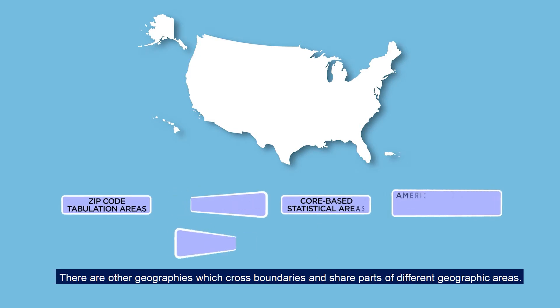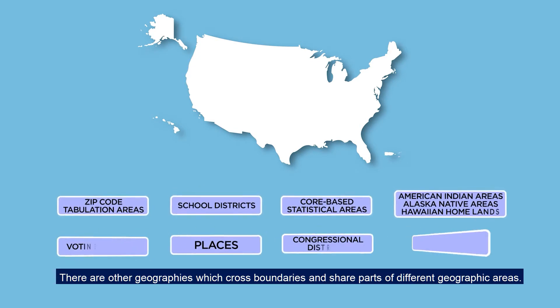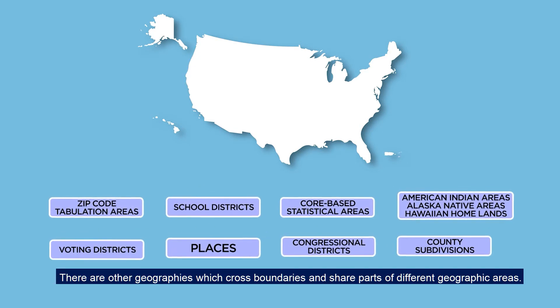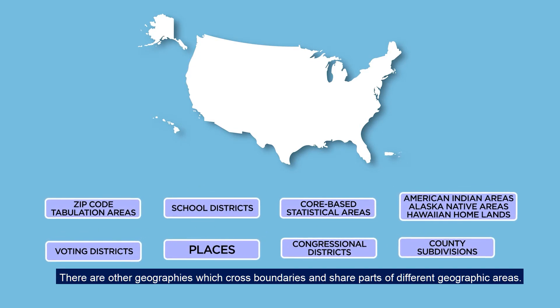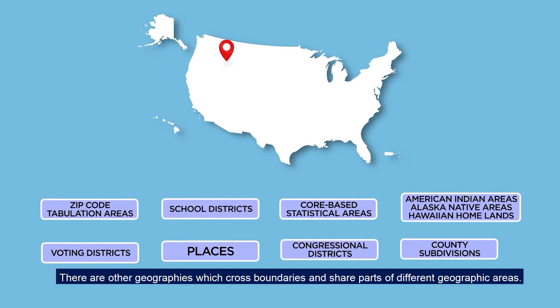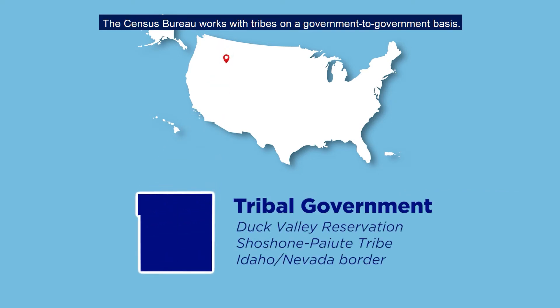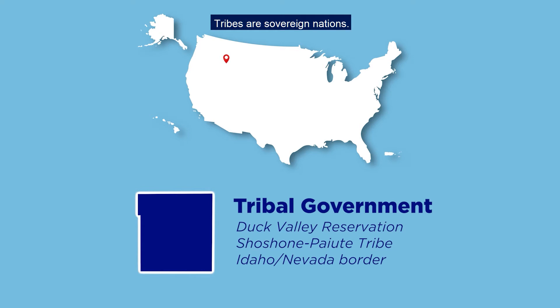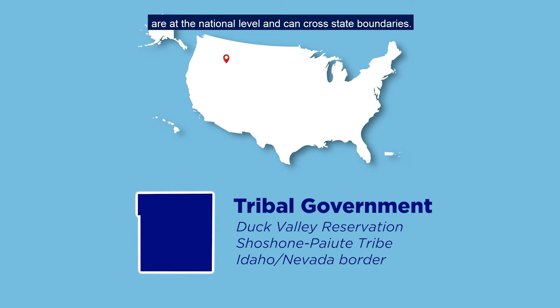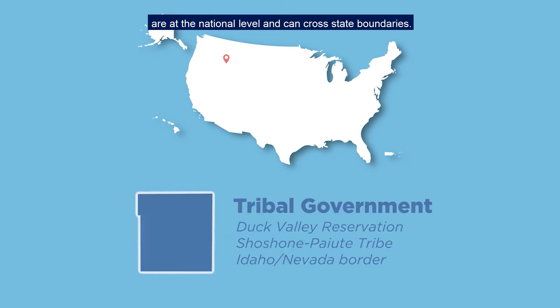There are other geographies which cross boundaries and share parts of different geographic areas. The Census Bureau works with tribes on a government-to-government basis. Tribes are sovereign nations. Federally recognized reservations and off-reservation trust lands are at the national level and can cross state boundaries.